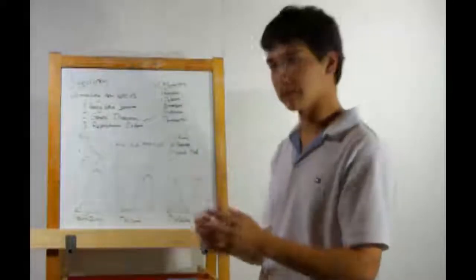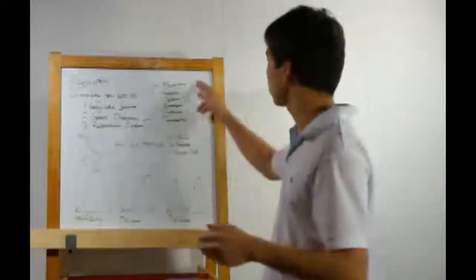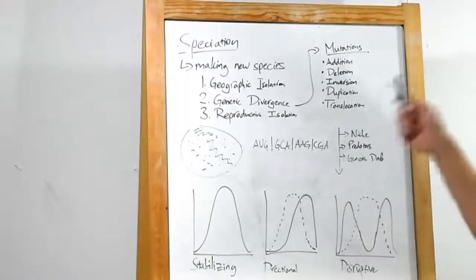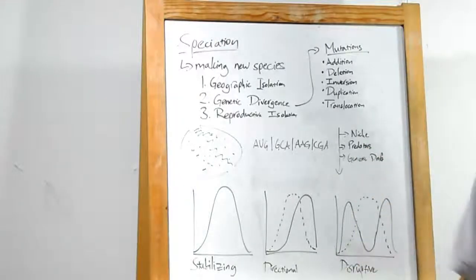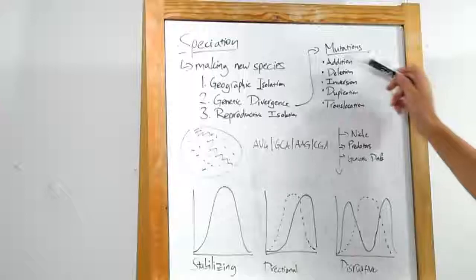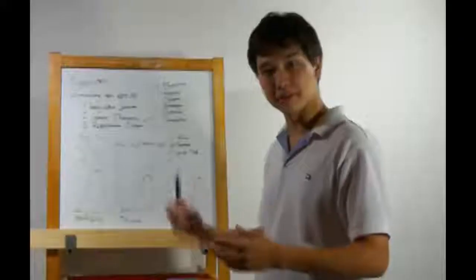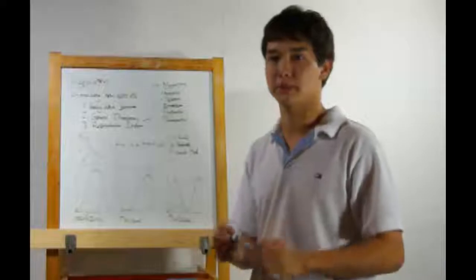On the microscopic level, this occurs through random mutation in genes. Addition, deletion, inversion, and duplication of translocation. It's okay, I'll explain all those. Addition is the adding of bases. Deletion is the removal of bases. These are known as frameshift mutations.